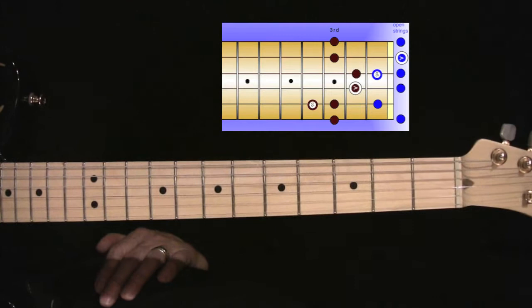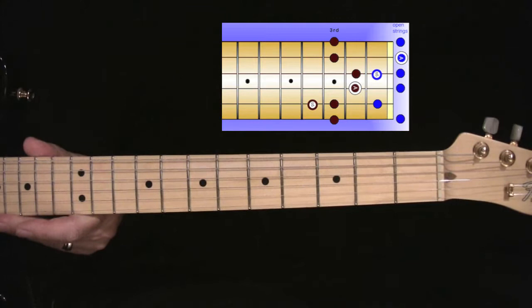This is the A Blues scale and here is position one, pattern number four, which is the blue and the brown dots. I'll run my track and play the lick for you.